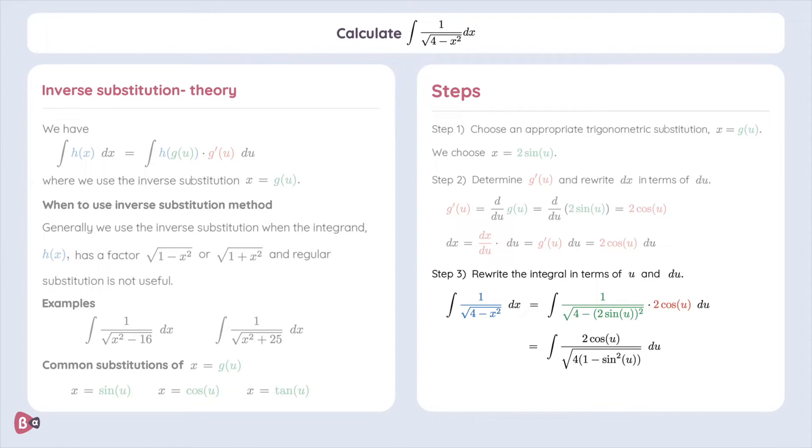Now we need to simplify the equation a bit. The good thing is that we can move the square root of 4 out of the big root, resulting in 2. Now the other part that we are left with in the denominator is the square root of 1 minus sine squared of u. That part might look familiar to you. It's actually equal to cosine squared of u, and the square of cosine squared just cancels out with the root. So now we've got 2 times cosine of u divided by 2 times cosine of u.